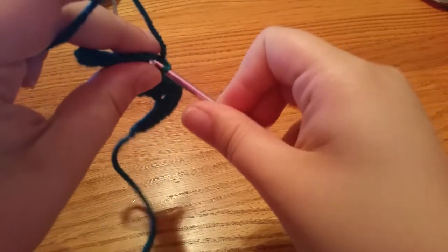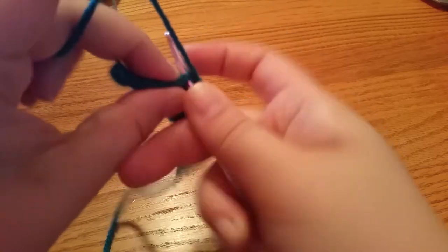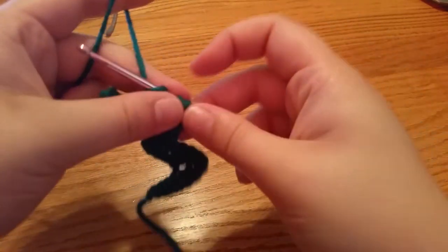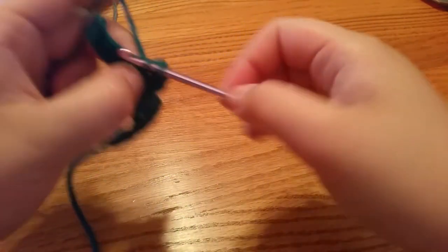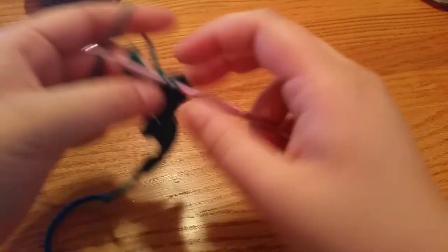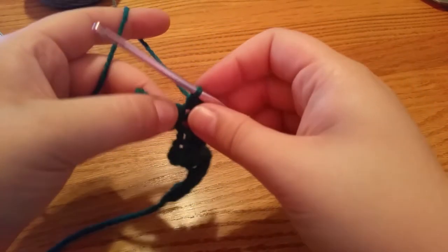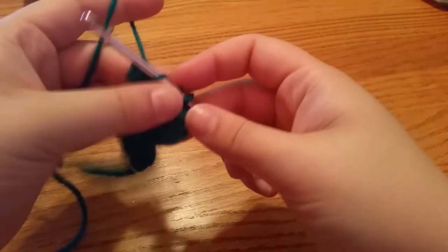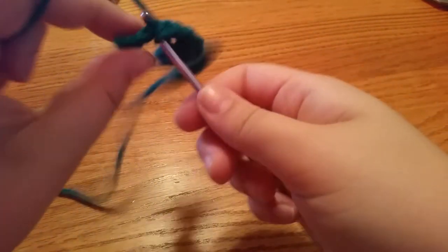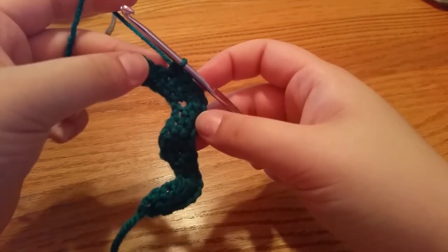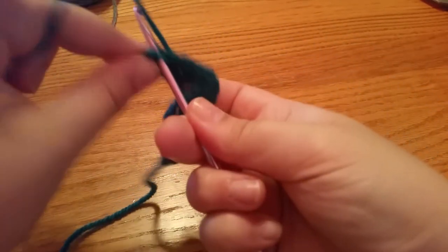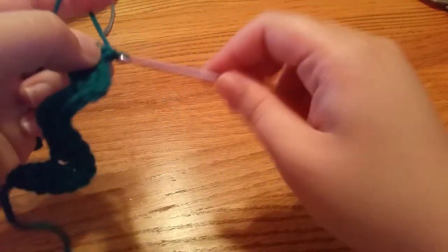At the top of the peak once again, single crochet three times into that stitch. This pattern is just going to repeat itself over and over again. So we're going to do three in the next three stitches. We're going to skip the next stitch and single crochet in the last. You'll chain one and you'll go on to the next row.